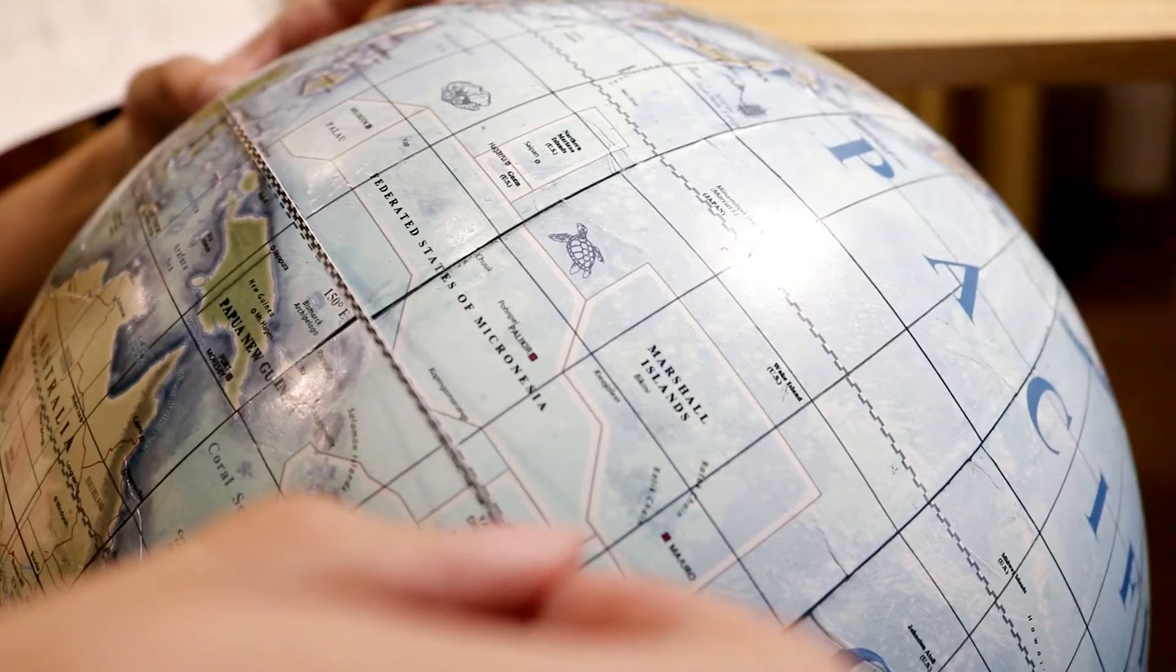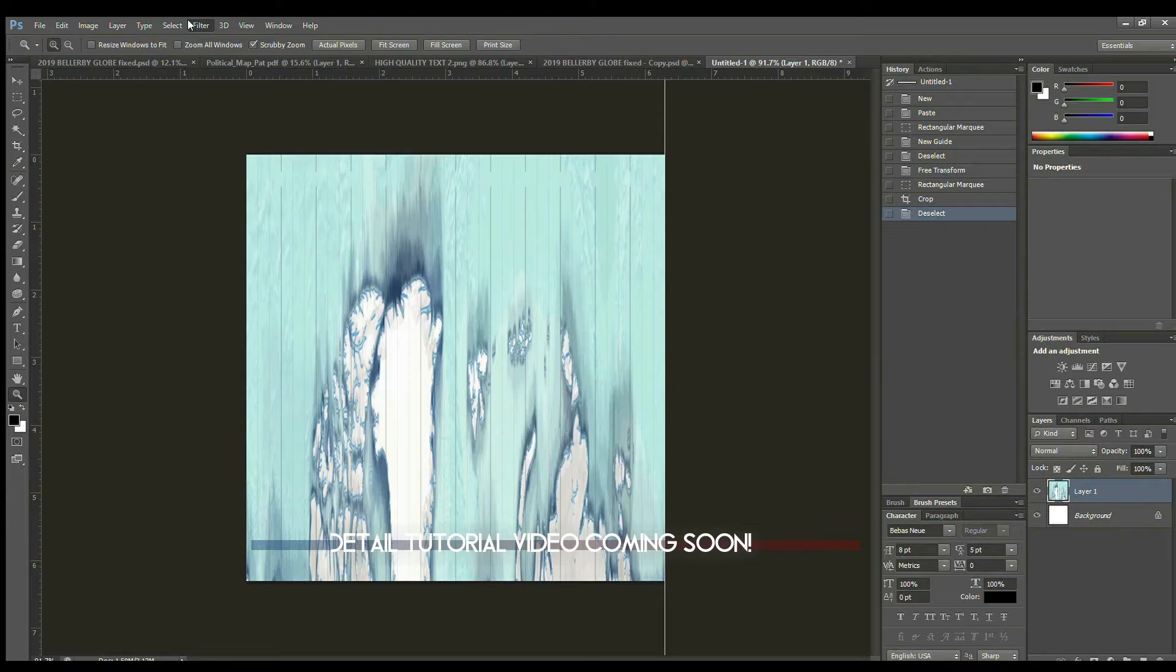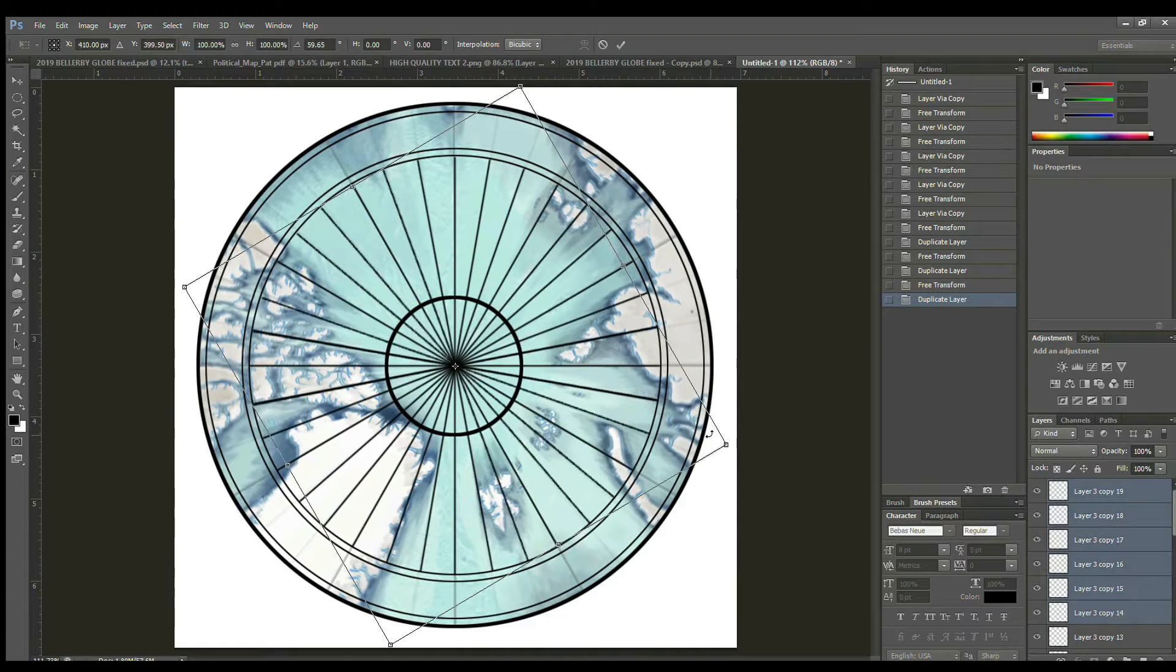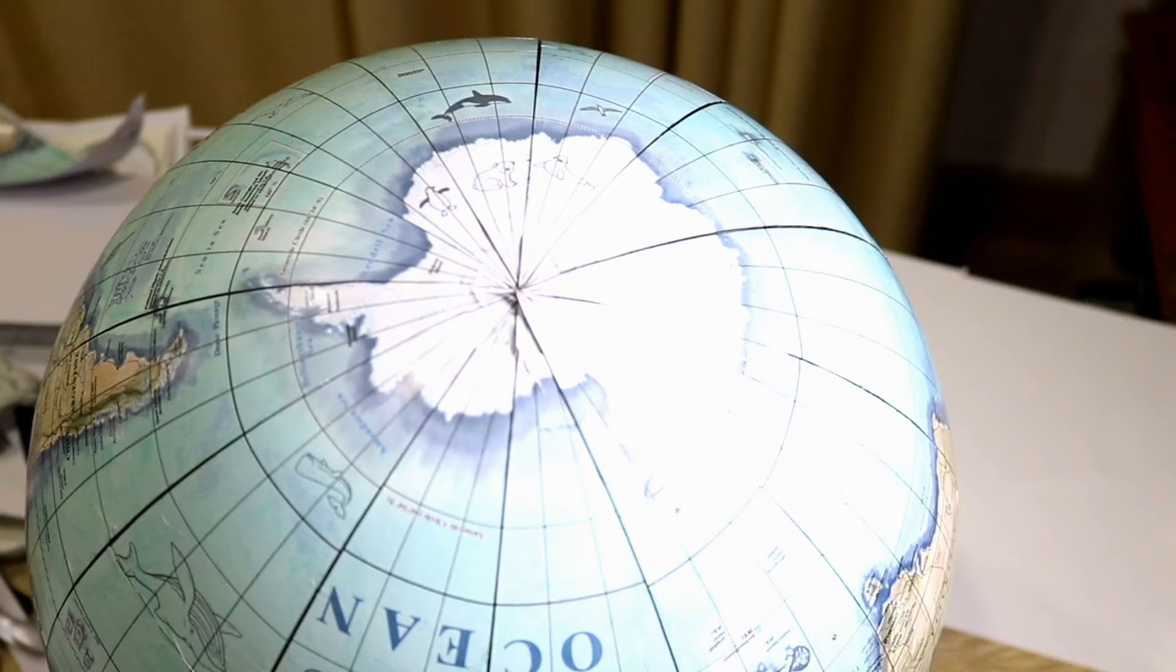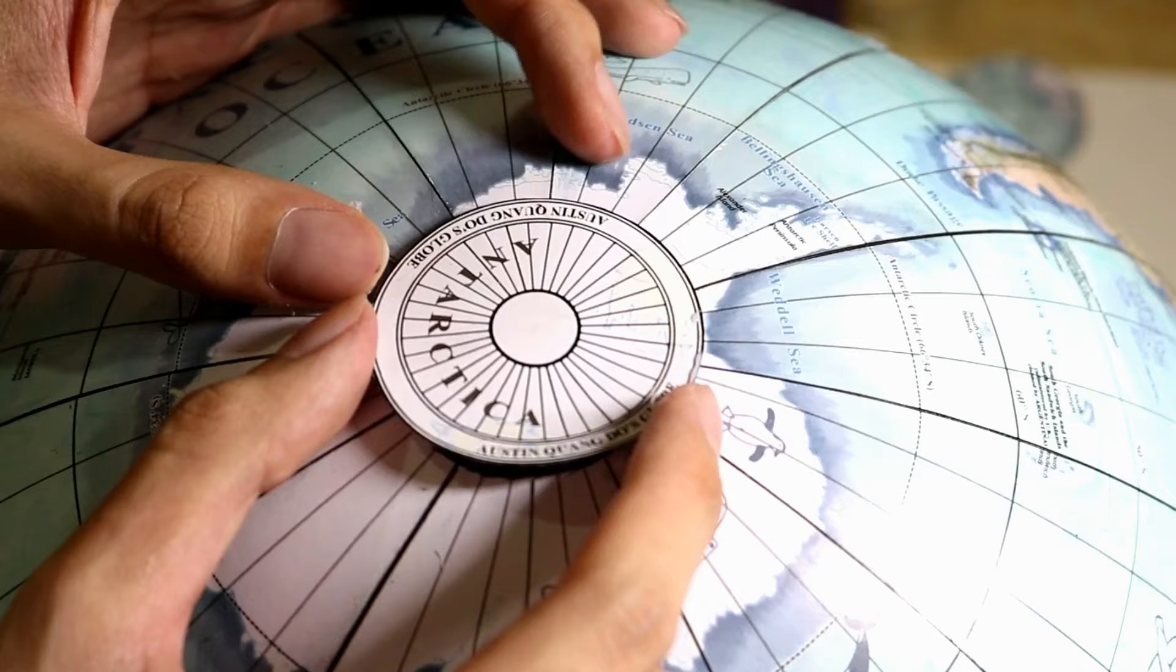Now, it's my favorite part: stick on the pole caps, just like how the Bellerby Globemakers do. I made this cap in Photoshop and printed them out. The north pole looks perfect and clean as it should be. The south pole, on the other hand, not so much. So I cut off this messy area, applying the south cap on, using the same technique to apply the gores.